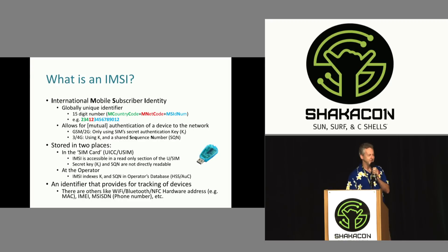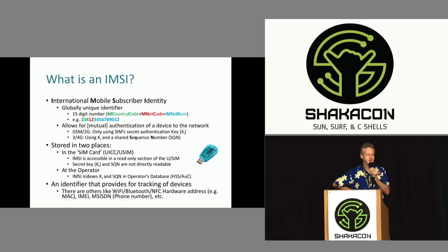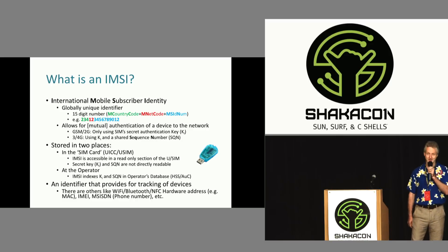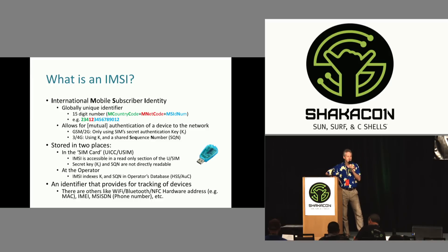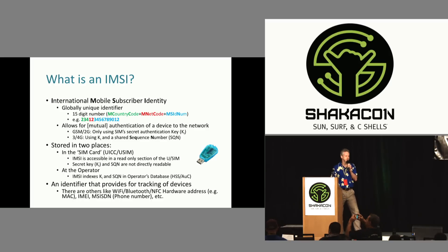So, what is an IMSI? As I said, it stands for International Mobile Subscriber Identity. It's basically a globally unique identifier, typically about 15 digits. It breaks down like this: the first three digits are a country code — not like a telephone country code, sadly. 234 is for the UK, whereas the normal telephone prefix is 44. Then you've got the mobile network number — in this case 12, which I think refers to Vodafone but could be any other. And the last set of digits is the mobile subscriber identity number, the unique bit that identifies your subscription.